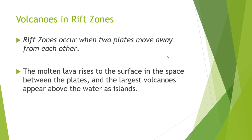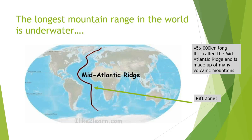Volcanoes in rift zones: rift zones occur when two plates move away from each other. Molten lava rises to the surface in the space between the two plates, and the largest volcanoes appear above the water as islands. The longest mountain range in the world is actually underwater — it's called the Mid-Atlantic Range and it's 56,000 kilometres long, made up of many volcanic mountains. It runs right from the top as you can see in this map.